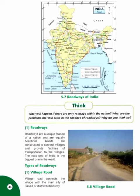Types of roadways: 1. Village Road. A village road connects the village with the main city of a Taluka or district. It is the road which connects the village with the main roads that pass by the village. It is called a village road, and is also called an approach road.